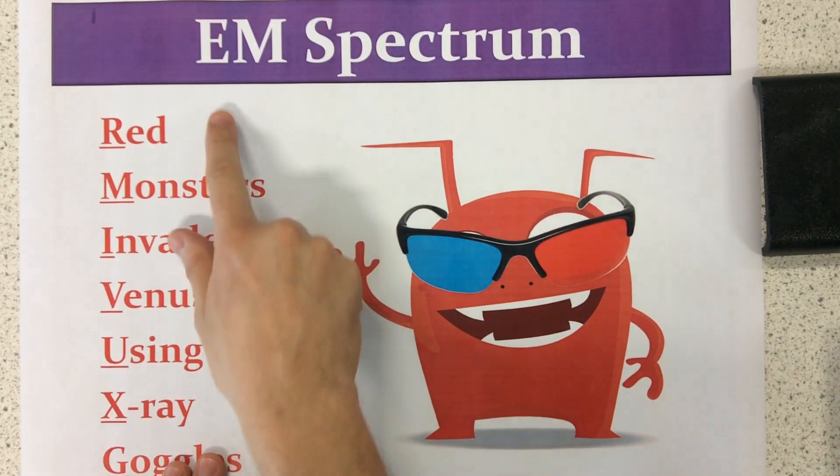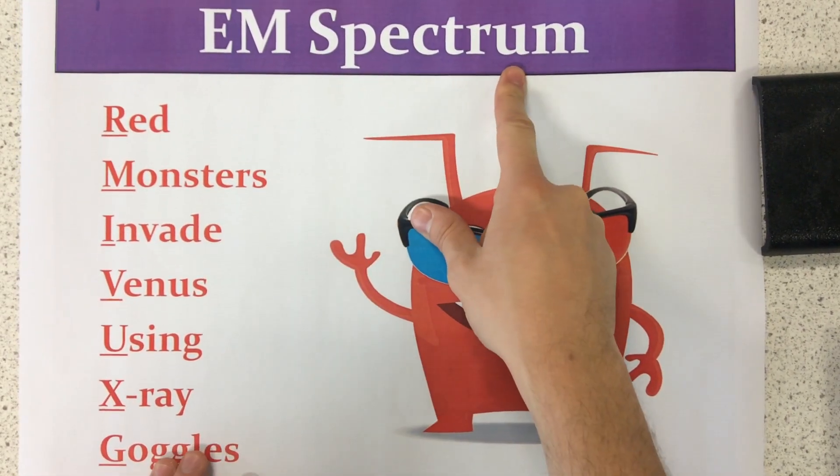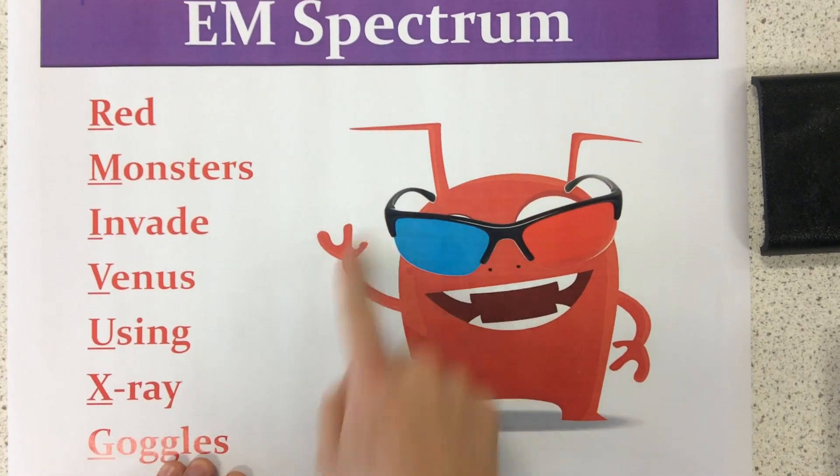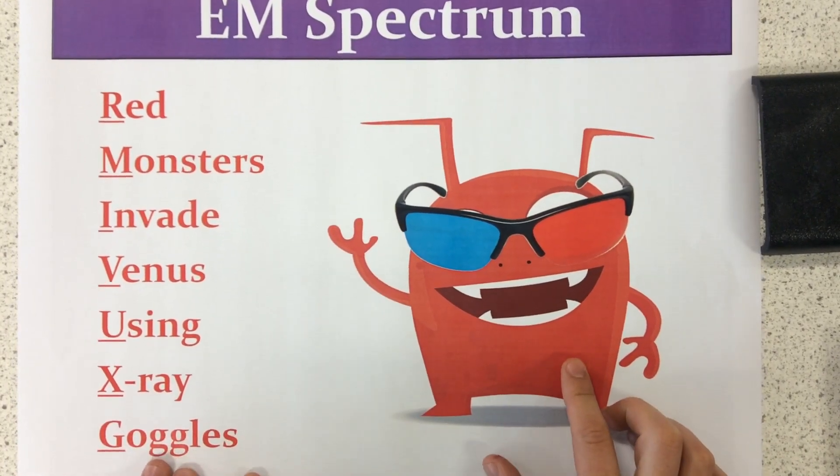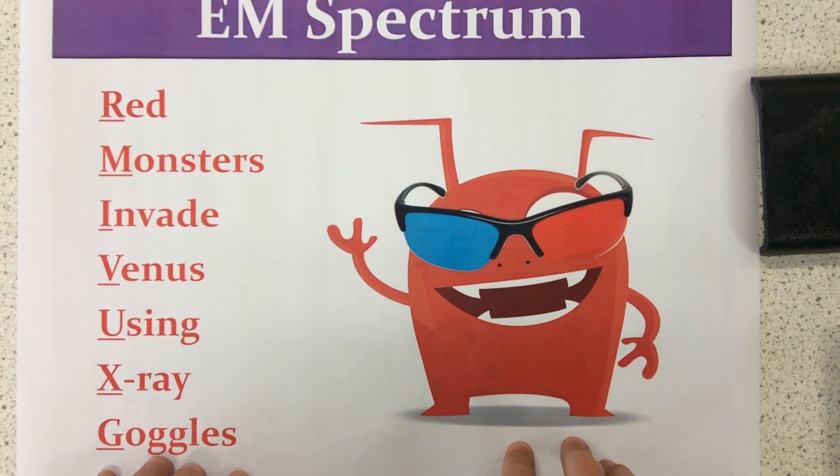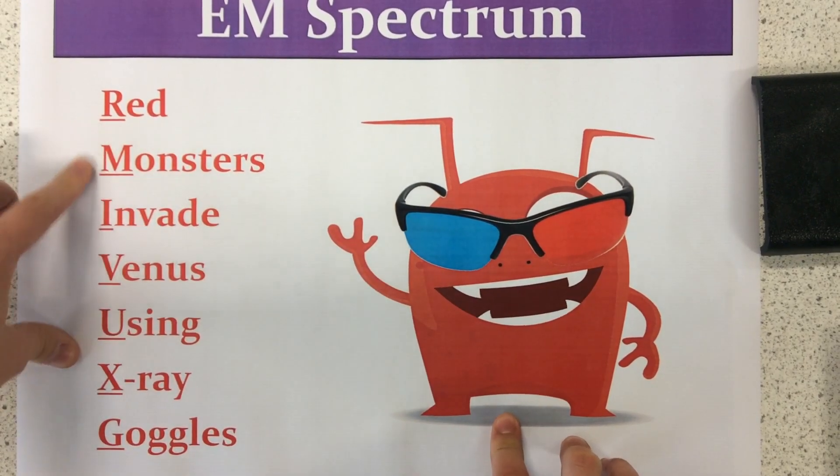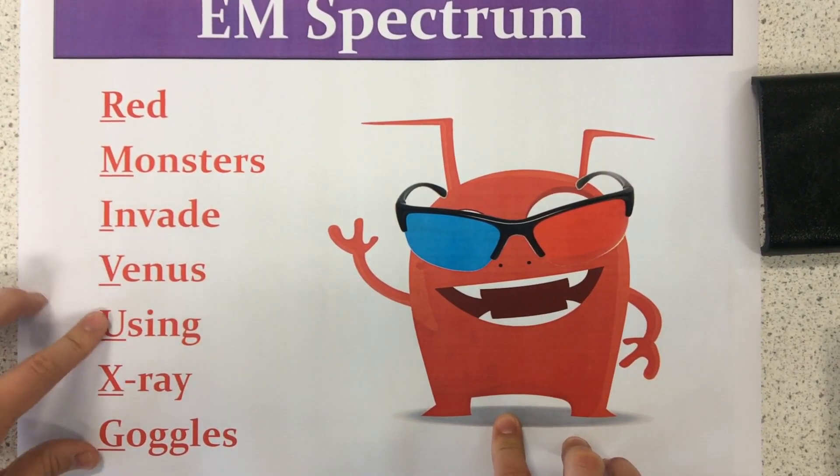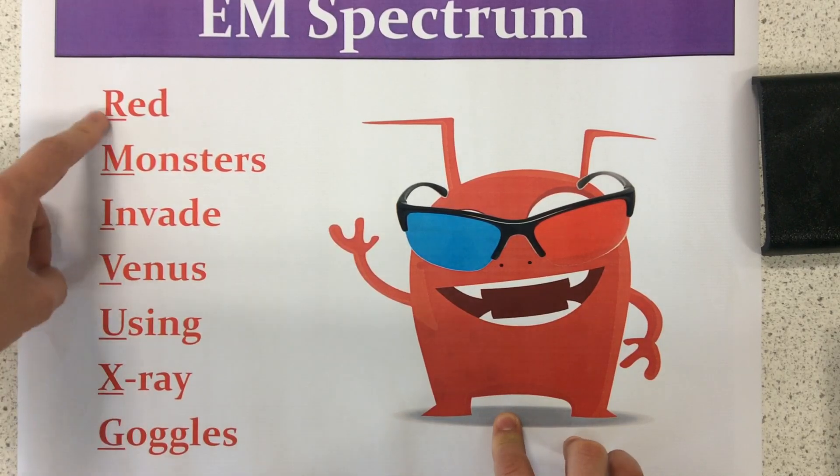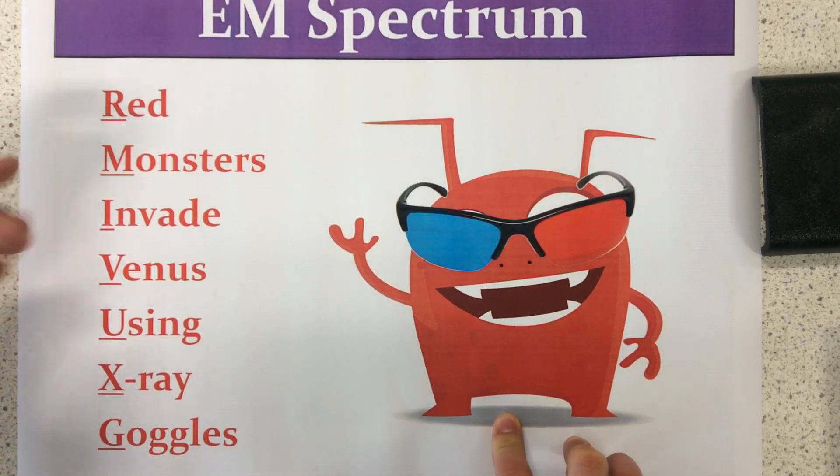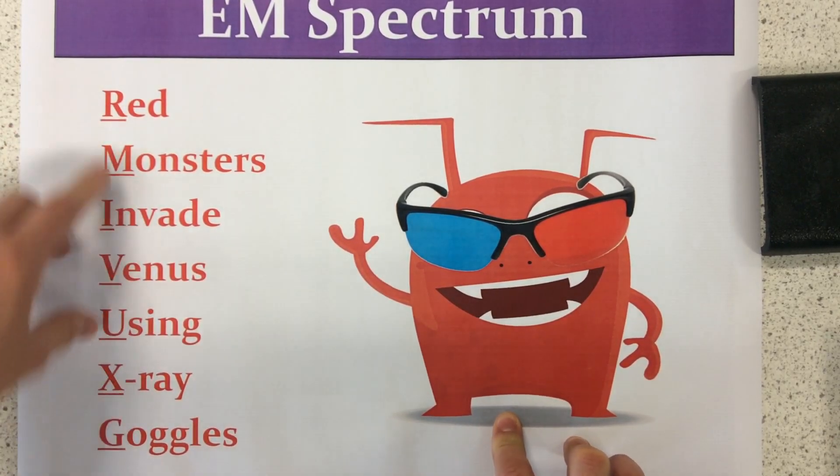Okay, today I'm going to talk to you about the electromagnetic spectrum. Now, this strange image is just to try and help you remember the different parts of the electromagnetic spectrum. Red monsters invade Venus using x-ray goggles. If you can remember this, then it helps you to remember the order of the different parts of the spectrum.